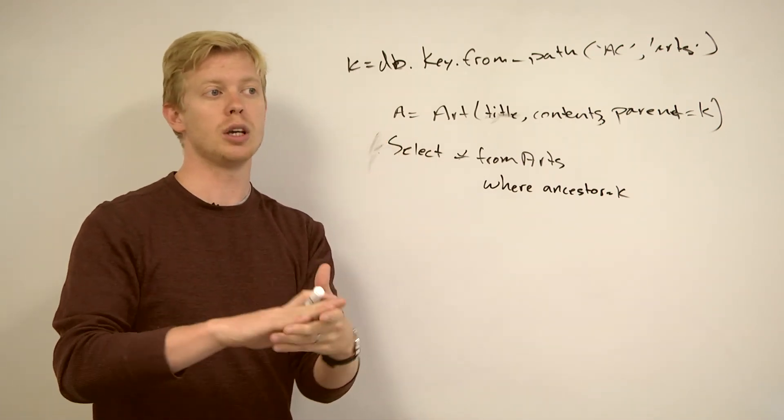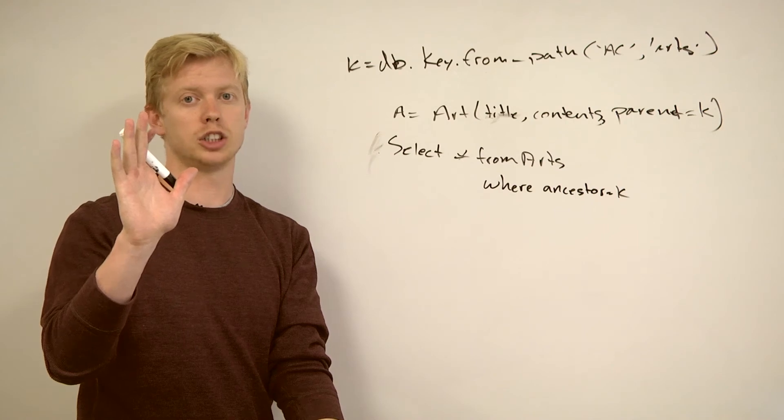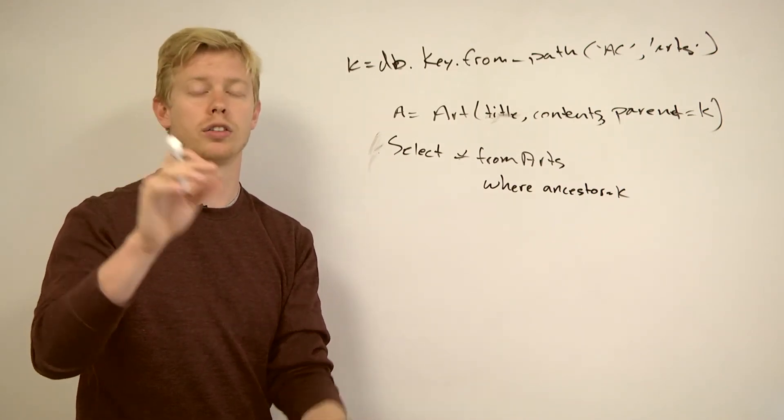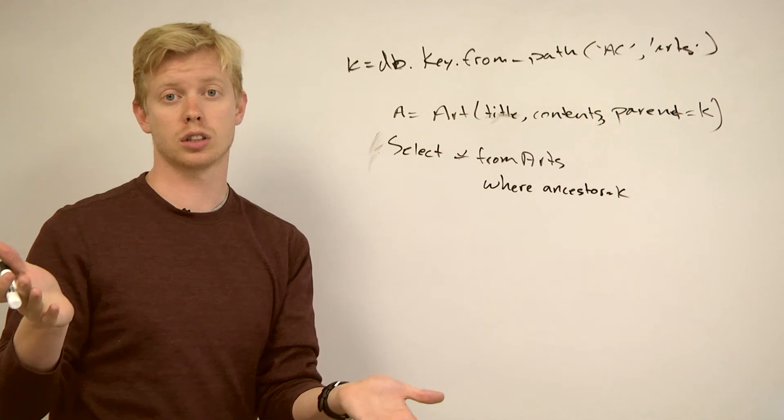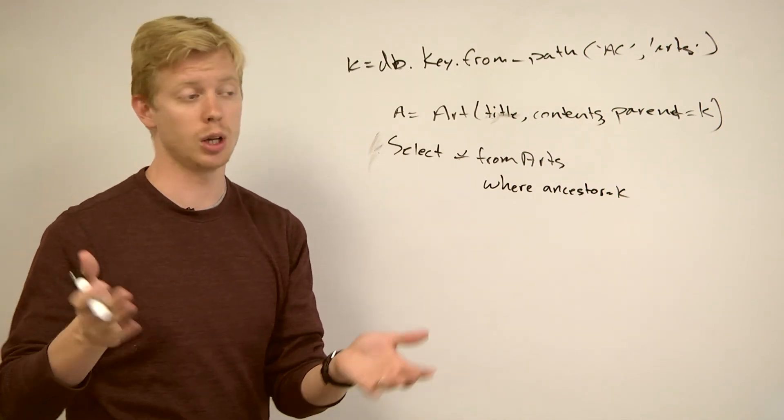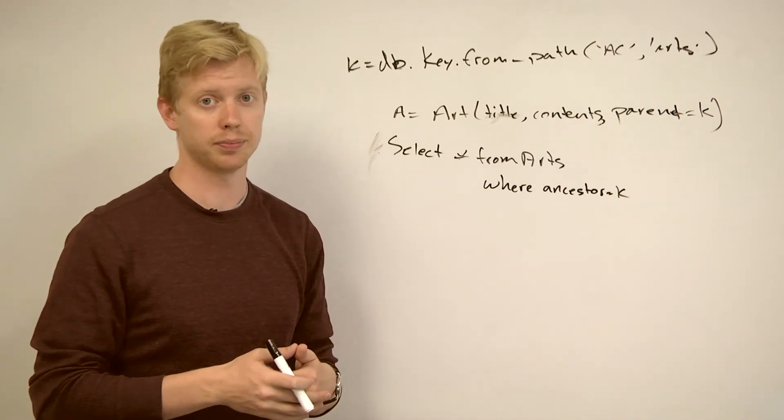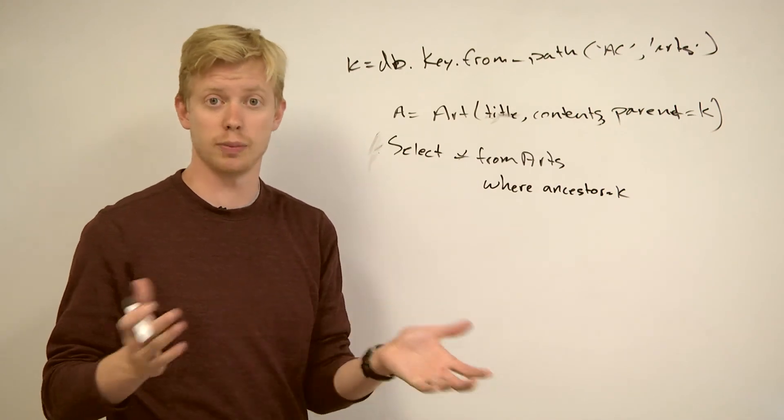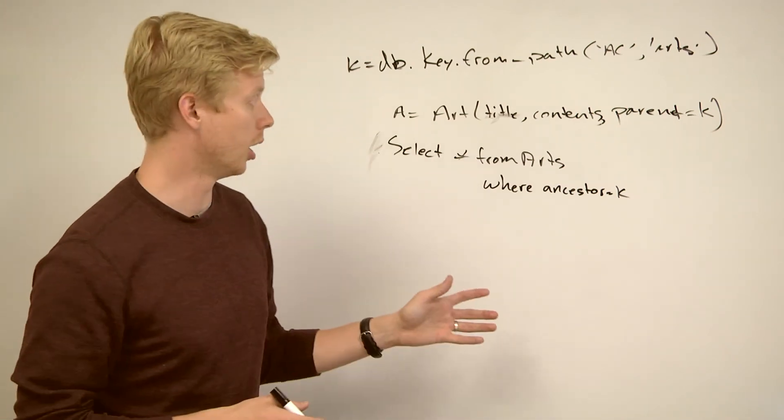get me all of the children of this parent, and I'll take the most recent one to actually show the page, and then when you click on the history view, I just say, get me all of the children of this parent. And that's how I did the version history thing, and that actually made it really easy to do using datastore.